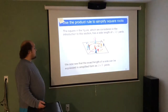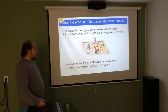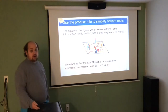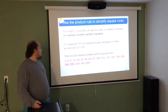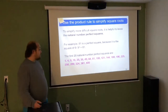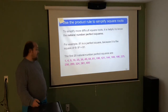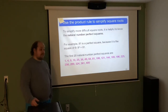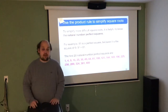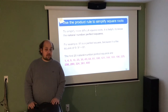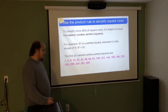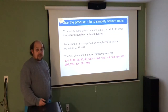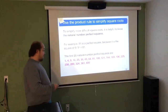The square we considered in the introduction has a side length of root 12 yards, which we can now write as 2 root 3 yards. To simplify more difficult square roots, it's helpful to know the natural number perfect squares. 81 is a perfect square because it's the square of 9 — 9 times 9 is 81. The first 20 natural number perfect squares are listed here. My recommendation is to have these numbers in your notes, or print the available sheet with common squares and cubes from the module.